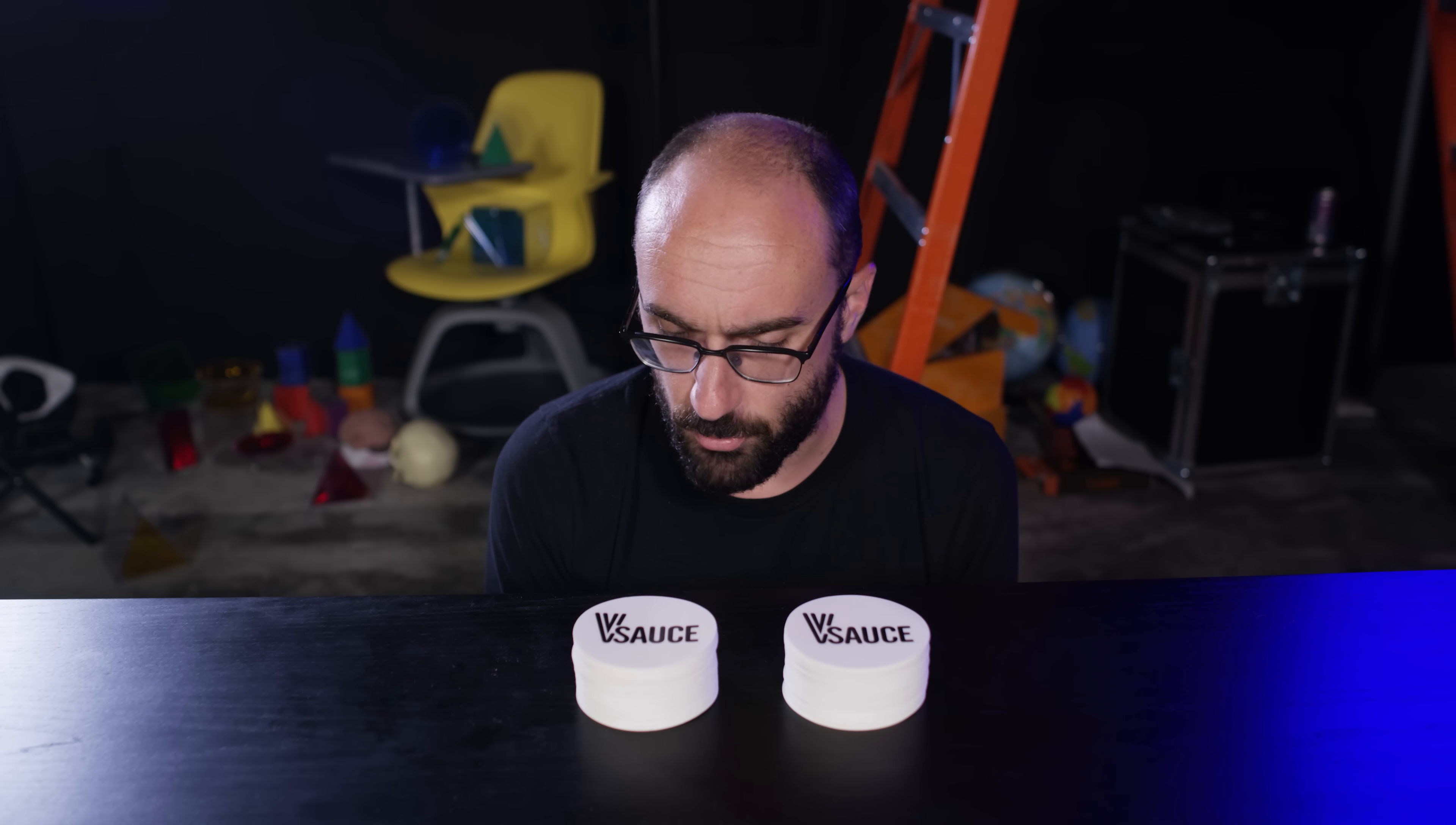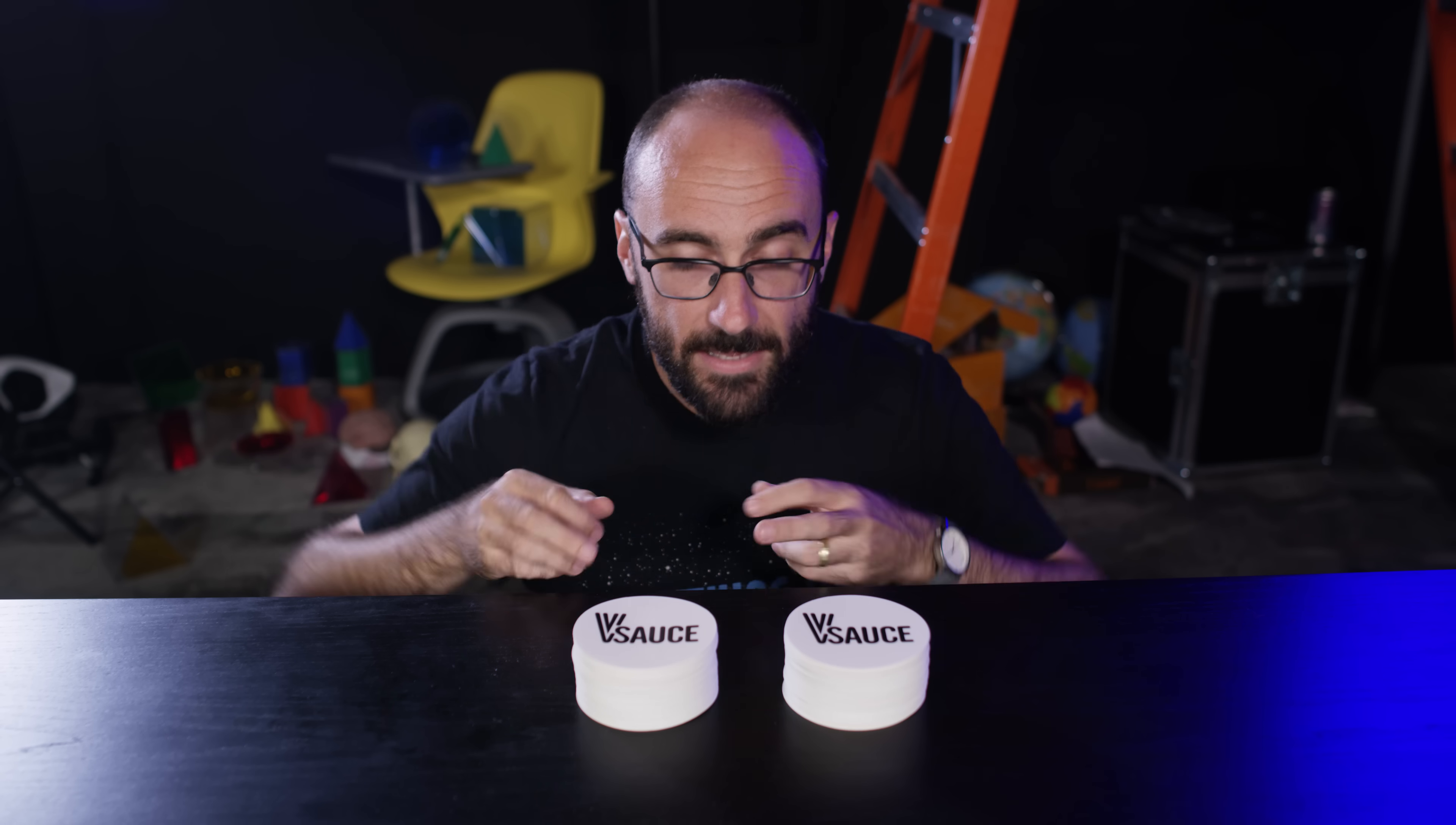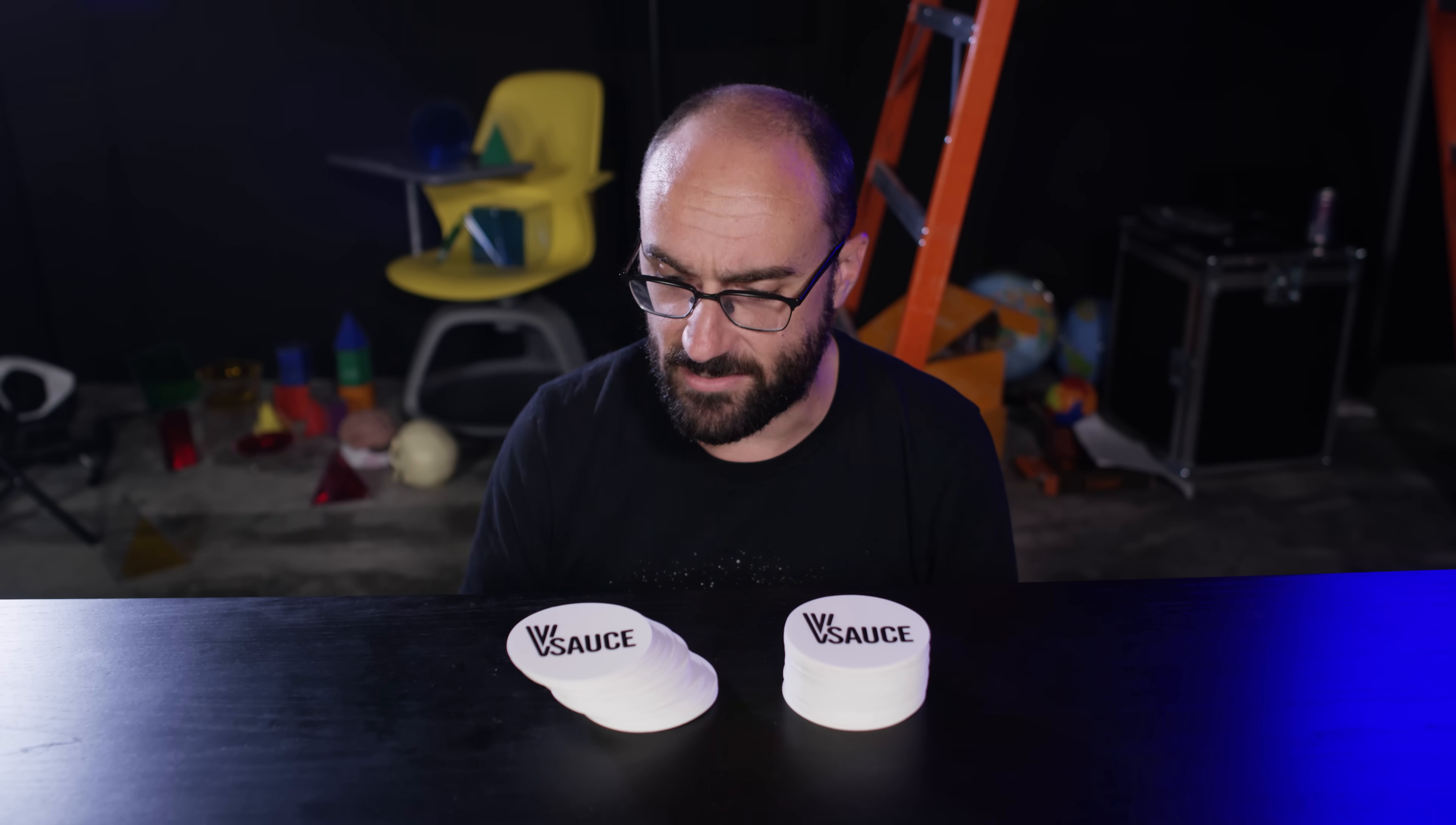Now that's clearly true here. These cylinders are built out of stacks of Vsauce stickers. 100 in each stack, so their volumes are the same. If I skew one of them, like this, its shape will change, but its volume hasn't. It still contains the same amount of stuff. I haven't added or subtracted stickers.